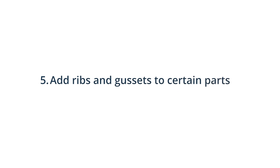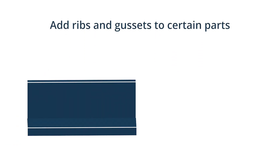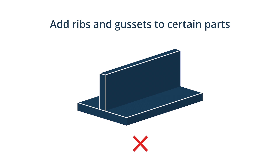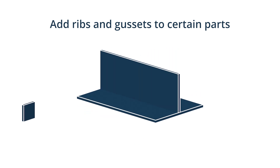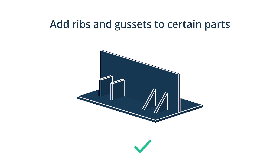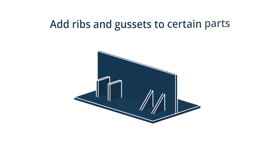Tip 5: Add ribs and gussets to certain parts. We recommend adding ribs and gussets to parts instead of increasing their thickness to strengthen them. They also help to eliminate cosmetic defects like warping, sink, and voids. However, if designed incorrectly, this can lead to the permanent bending of some sections. The warping can be reduced by keeping the rib thickness between 50 to 60% of the thickness of the wall it is attached to.